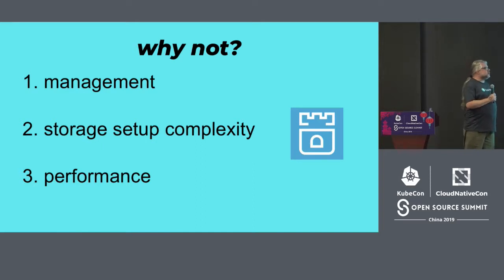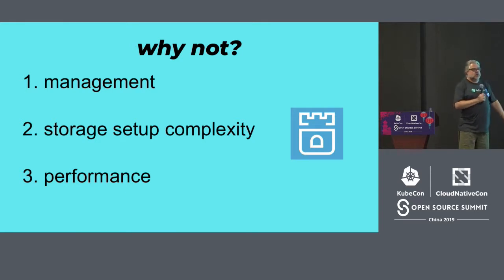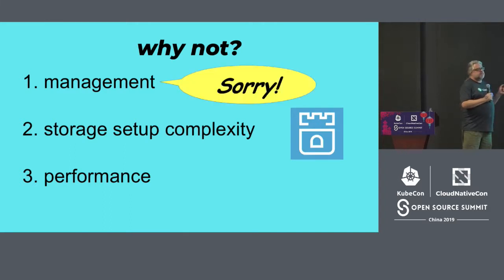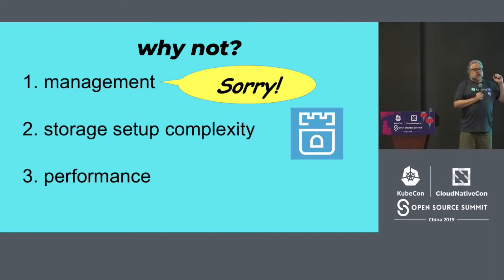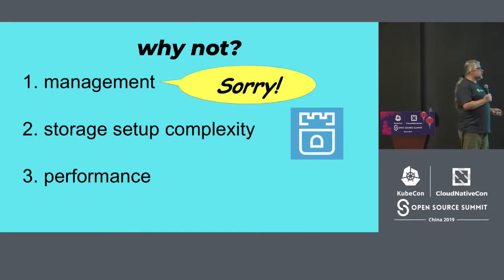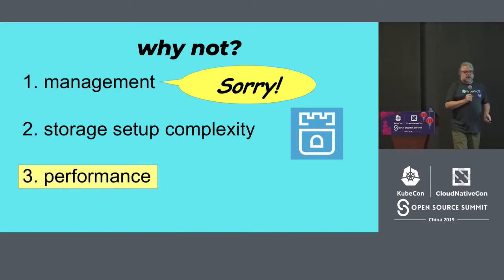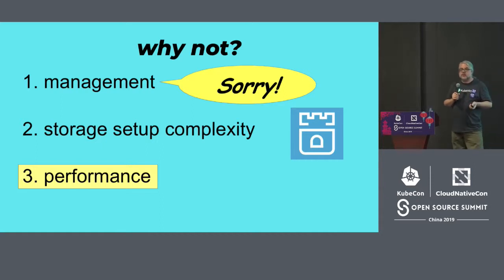I'm involved with the Rook project, which deals with the storage setup complexity issue — setting up cloud-native storage for Kubernetes and OpenShift. I don't have answers for the database management problem. I was literally this morning troubleshooting a project where a developer noticed a database error and tried to fix it, which meant I had to fix what the developer did. You still need to understand how the database works even in a cloud-native environment. So what this talk is about is the third component: performance.